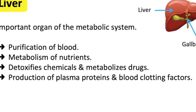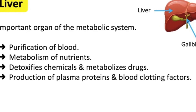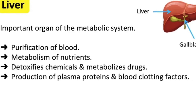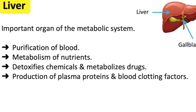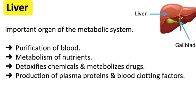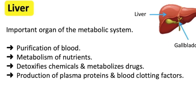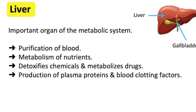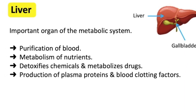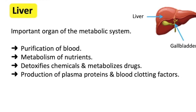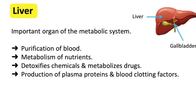Production of plasma protein: protein synthesis is a vital production carried out by the liver. Protein synthesis is necessary for cell structure and functions. The liver is also involved in the production of clotting factors.